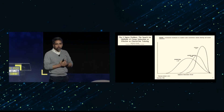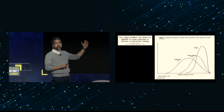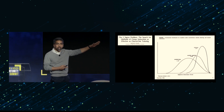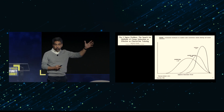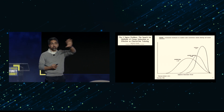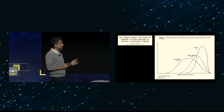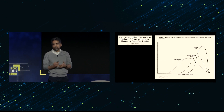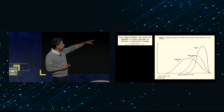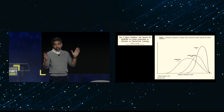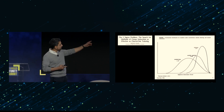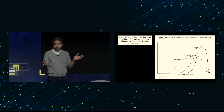Benjamin Bloom's famous Two Sigma problem study — the cliff notes version: he argued back in 1984, what if we could give every student a personal tutor? He had evidence it could give a two-standard-deviation improvement, which is huge — going from an average student to the top 5%, or below average to above average. He called it a problem because you can't afford to give every student a personal tutor. But he theorized you could use technology, even back in 1984, to emulate some of it. That's the journey Khan Academy has been on for the last 15-plus years.